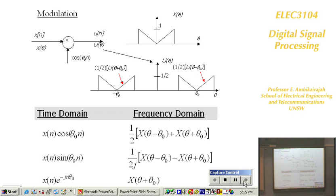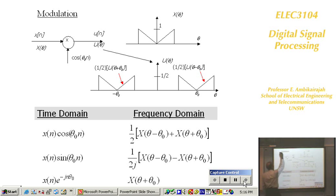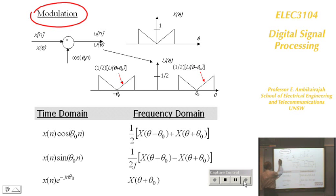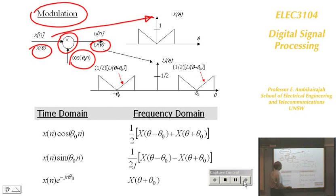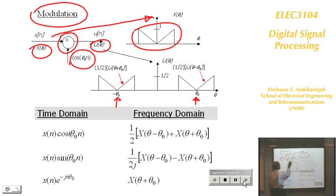Now we look at modulation in multirate systems. In digital modulation, signal Xn is multiplied by a carrier cos(θ₀n) from a digital oscillator. This gives a double-sideband suppressed-carrier signal. Multiplying by cos(θ₀n) shifts the spectrum: you get half X(θ − θ₀) plus half X(θ + θ₀), each at half the amplitude, centered around the carrier frequency θ₀.